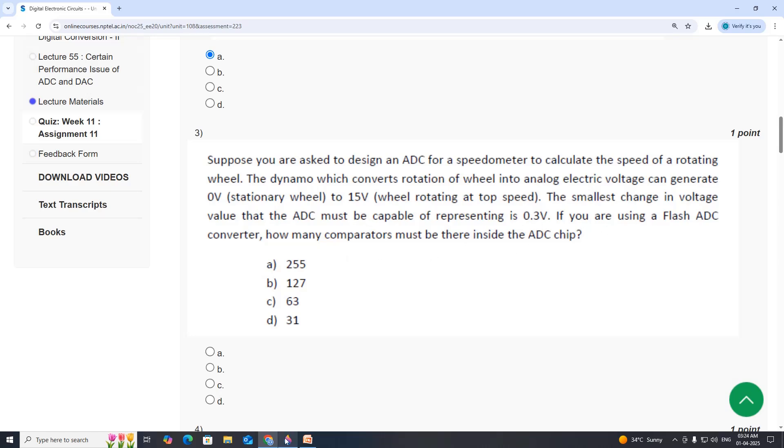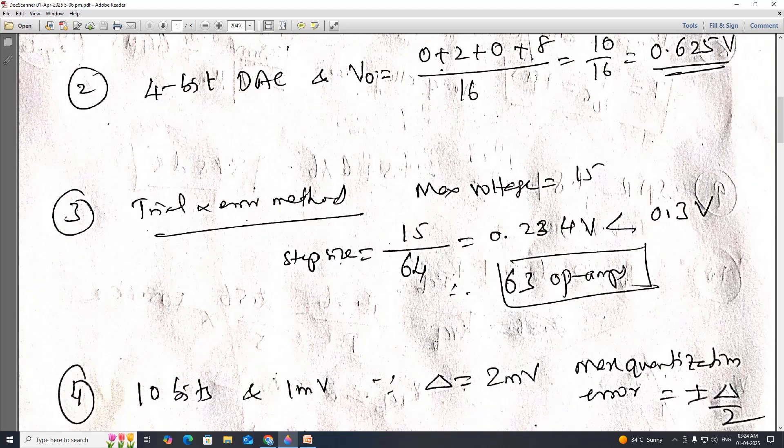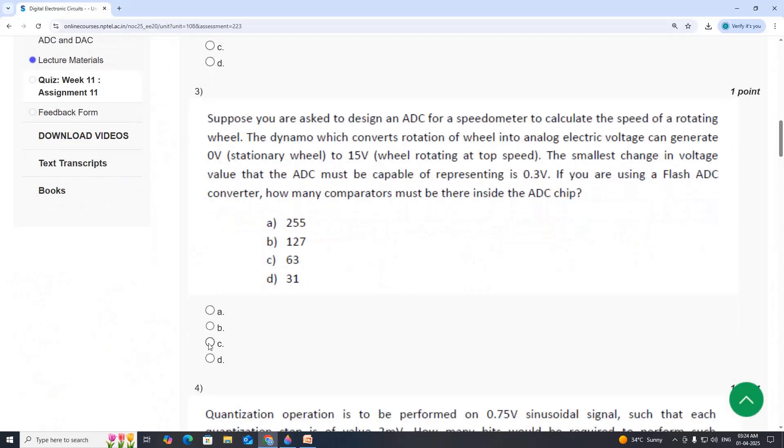Now, how many comparators are required? So by trial and error method, maximum voltage is 15, and step size is 15 by 64, because 15 is the maximum voltage. We will try with 64, and we will get step size equal to 0.234V, which is less than 0.3V. Therefore, we require 63 comparators. Option C.